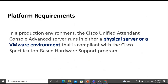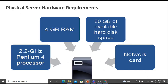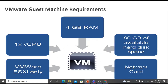In a production environment, the Unified Attendant Console Advanced server runs on either a physical server or a VMware environment compliant with Cisco's hardware support program. Physical server requirements are: 2.2 GHz Pentium Core processor, 4 GB RAM, 80 GB available hard disk space, and a network card. For a VMware guest machine, the requirements are: VMware ESXi host only, one virtual CPU, 4 GB RAM, and 80 GB available hard disk space.